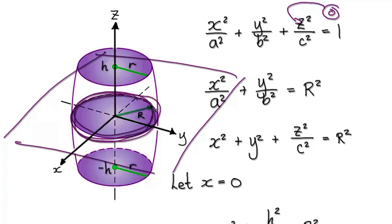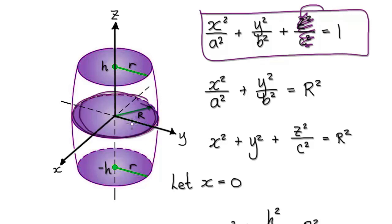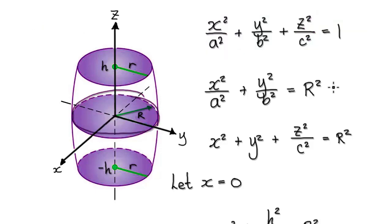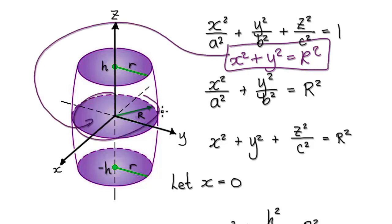Setting z to 0 gives you the big circle. In the y direction, you can see that this is capital R, and in the x direction, this is also capital R. We're looking at a circular cross-section, not an ellipse, so A must equal B. Any equation of the form x squared plus y squared equals R squared gives you a circle with radius R.